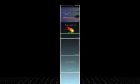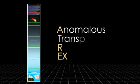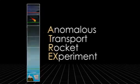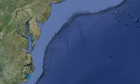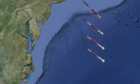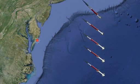It is also high enough that only powerful rockets are capable of reaching it. The ATREX, or Anomalous Transport Rocket Experiment mission, is launching to study this ultra-high altitude wind over the eastern seaboard of the U.S. It will consist of five rockets launched within minutes of each other from the Wallops Flight Facility in Virginia.